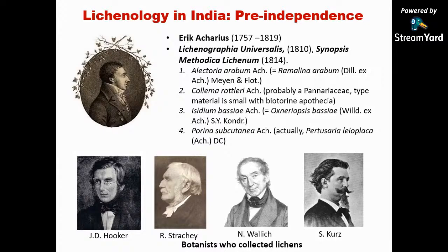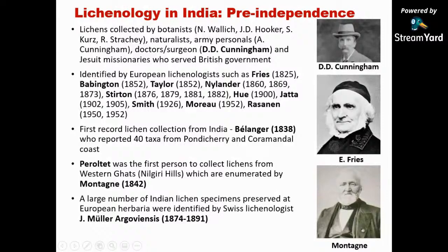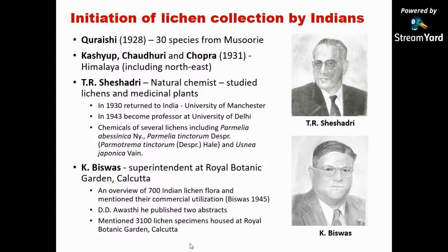Fries, Montagne, and Müller Argoviensis were lichenologists who studied the lichens of India. People collected material and transferred it to Fries, Montagne, and others who in turn studied and published papers. Only in the later 1930s and 40s did Indians start studying the lichens of their own country — Qureshi, Kashyap, Chowdhury, and Chopra were among the first Indians. T.R. Seshadri was a very popular natural chemist from South India who settled at Delhi University and published papers regarding the unique chemistry of lichens, though his material was also identified by Europeans.